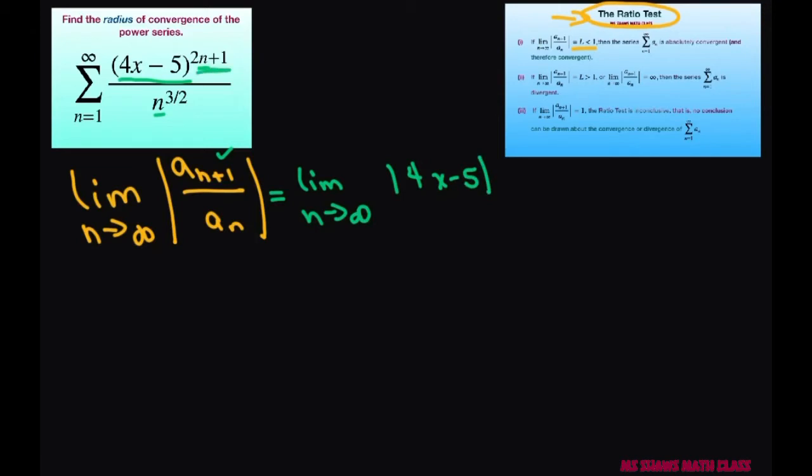Now when you add one to this, this is 2 times n plus 1, which is 2n plus 3. And then for this piece, this is going to be n plus 1 to the power of 3 halves.